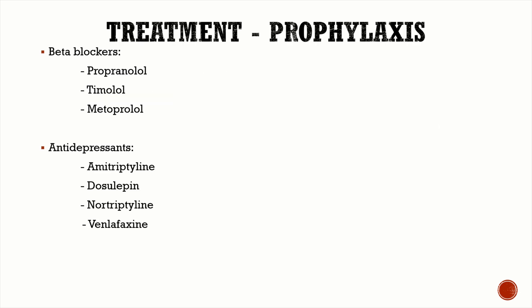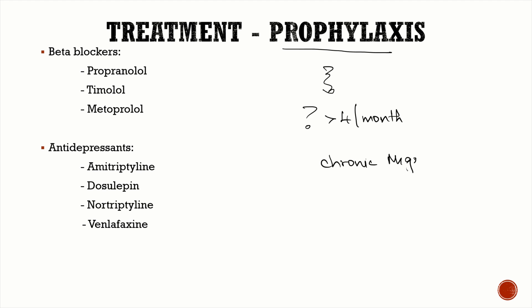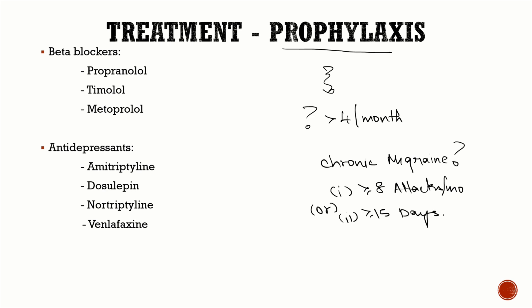For prophylaxis, ideal candidates are patients with more than four attacks per month and patients with chronic migraine. Chronic migraine is defined as eight or more attacks per month, or at least 15 days of headache per month. Prophylactic drugs include beta-blockers like propranolol and timolol.